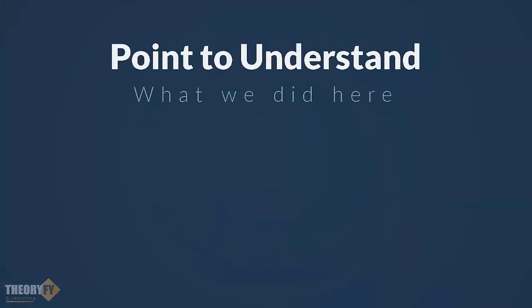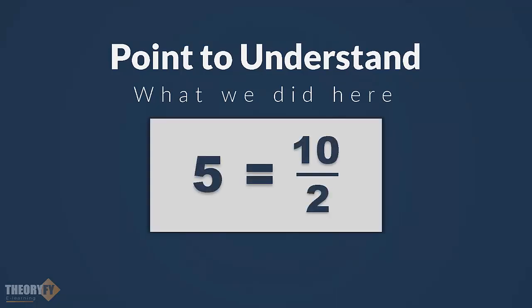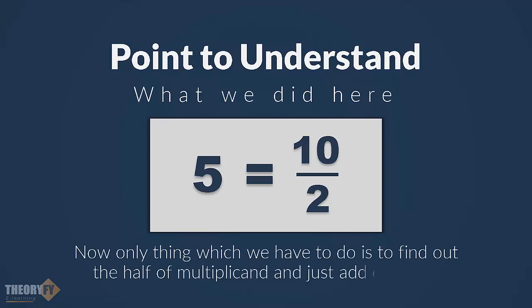Now, the point to understand here is 5 is half of 10. So, 10 by 2 is equal to 5. Now, only thing which we have to do is to find out the half of the multiplicand and then in last, just add one 0 and that way you can multiply any number with 5.